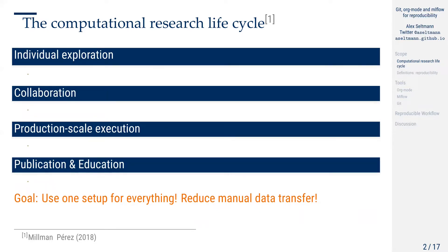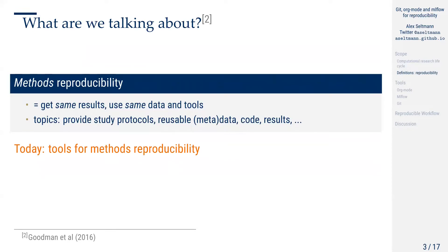Initiatives like those we heard about today try to address that. Secondly, there is usually a lot of manual transfer involved between these different stages, and this of course is prone to errors. Of course, all these problems are both technical and social. Today I mainly focus on the technical issues, but the social ones have to be addressed as well. Also, regarding the title of the talk, I mentioned reproducibility, and I want to make clear there are different kinds. The one I am talking about is methods reproducibility as defined by Goodman et al., where we try to make a scientific pipeline as reproducible as possible — dealing with study protocols, reusable metadata, code, and results.